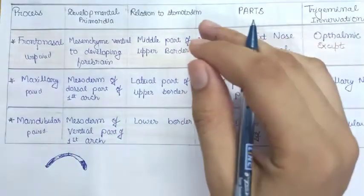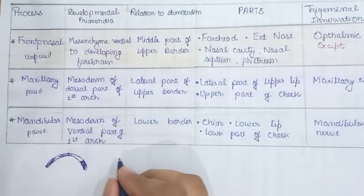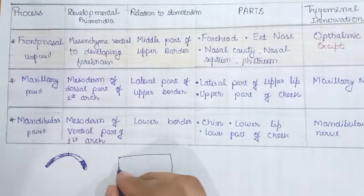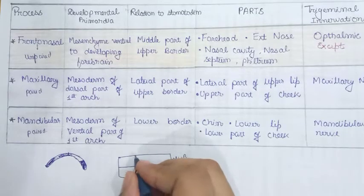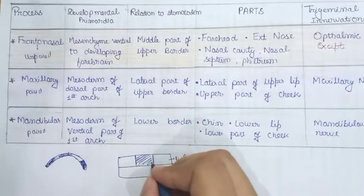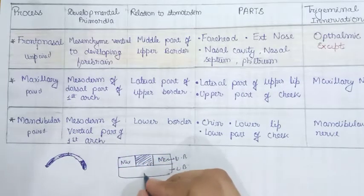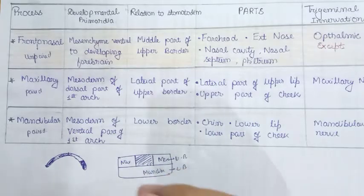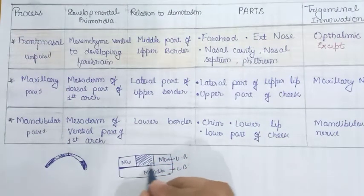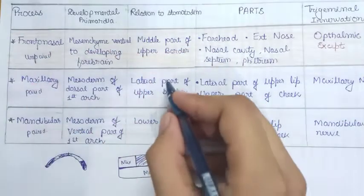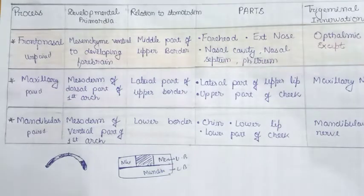Now regarding the relation to the stomatodeum: all face structures develop from structures near the stomatodeum. The stomatodeum has an upper border and a lower border. At the upper border, in the center we have the frontonasal process, and on the sides we have the maxillary process. At the lower border we have the mandibular process. This is the spatial relationship of the three processes relative to the stomatodeum, and you should write this in your answer sheet.